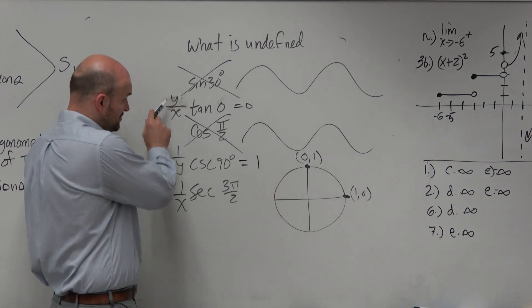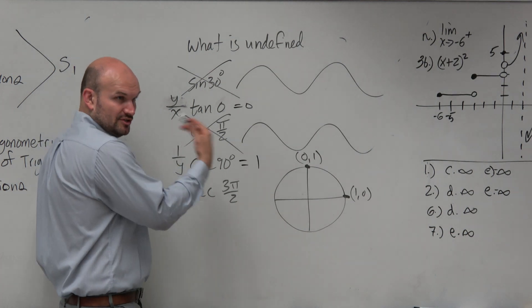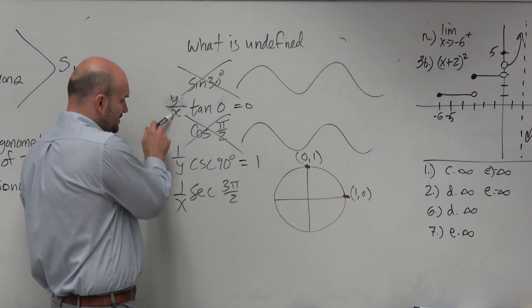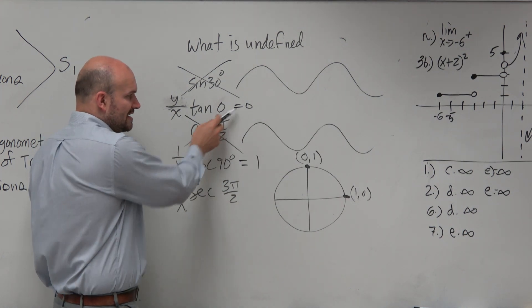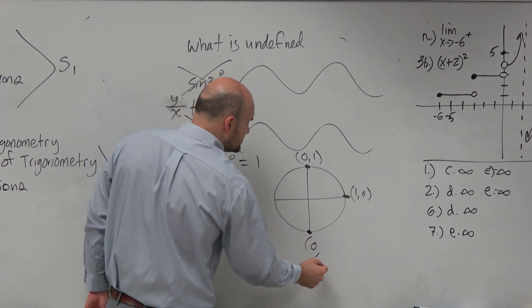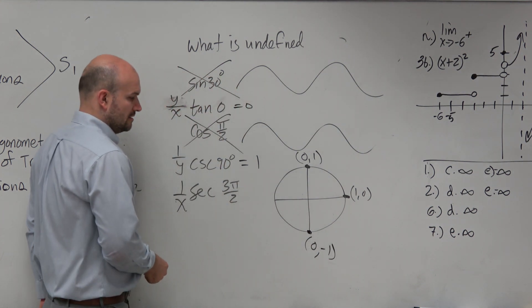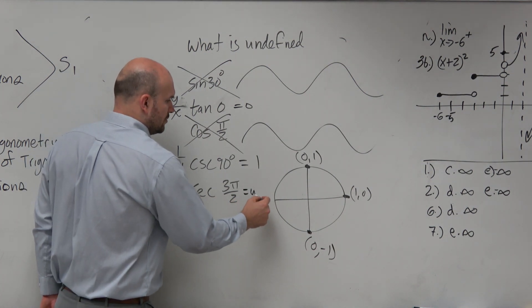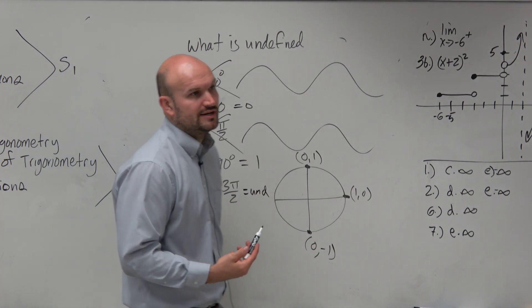And then this one, even though you think it would make sense, that's why you want to plug them in to double check, because they're for different points. Even though both have x's in the denominator, they're not for the same point. This one's for 3π over 2, which is the coordinate point 0 comma negative 1. And again, remember this is 1 over the x-coordinate. Well, the x-coordinate there is 0, so it's undefined.